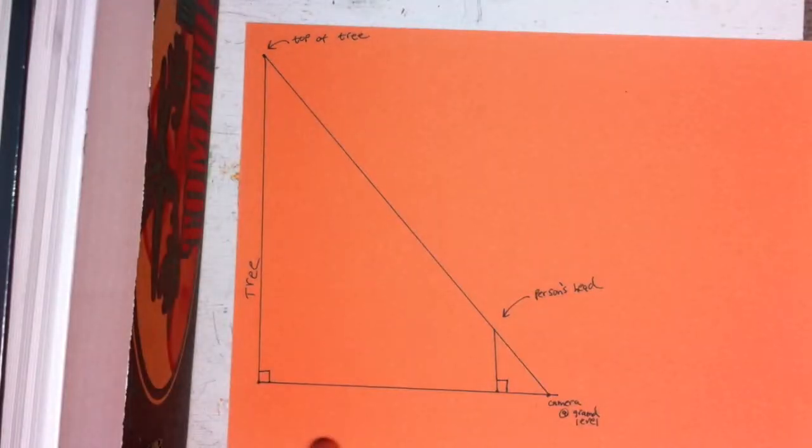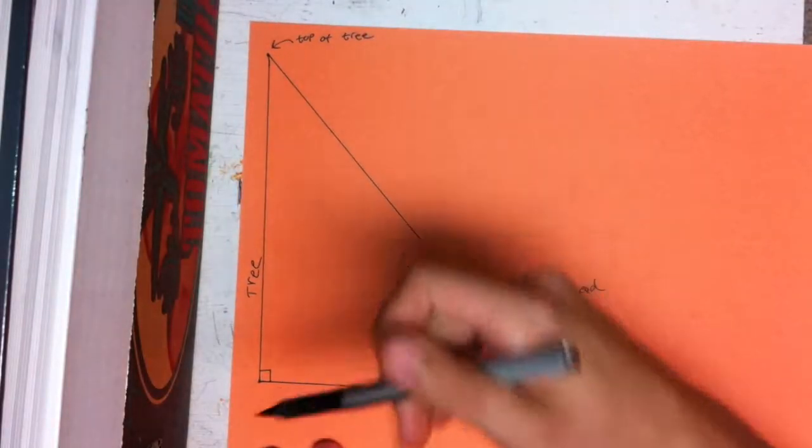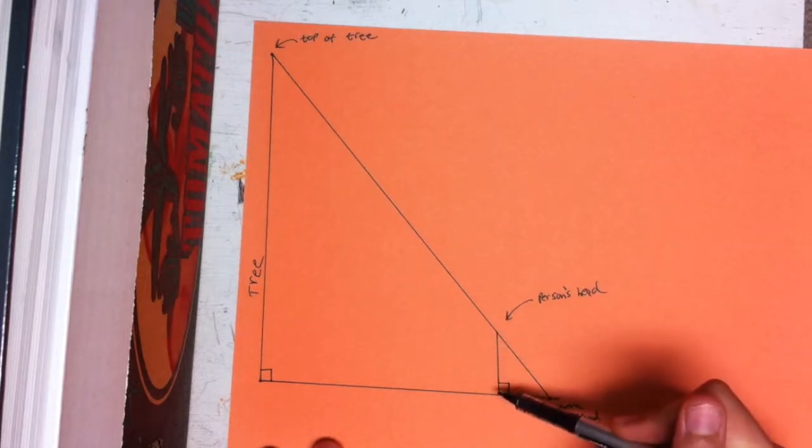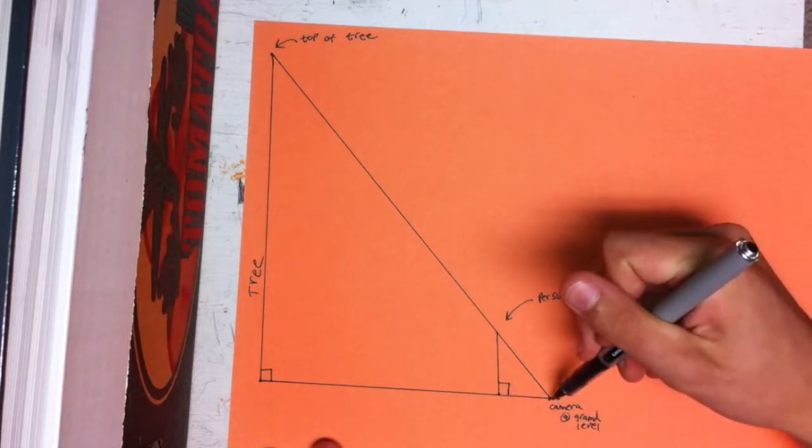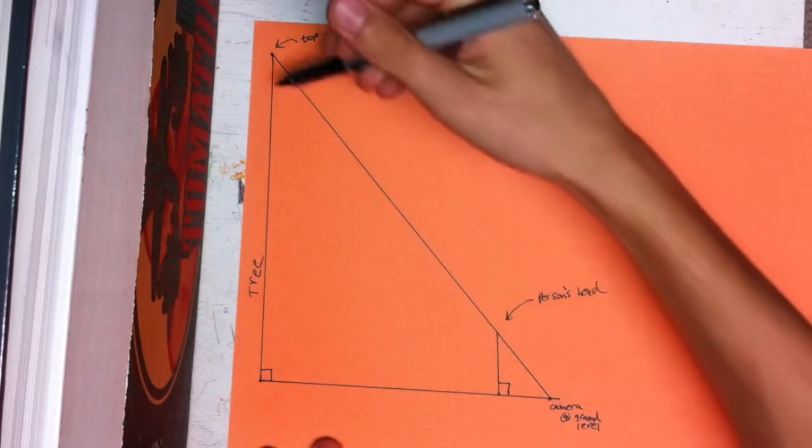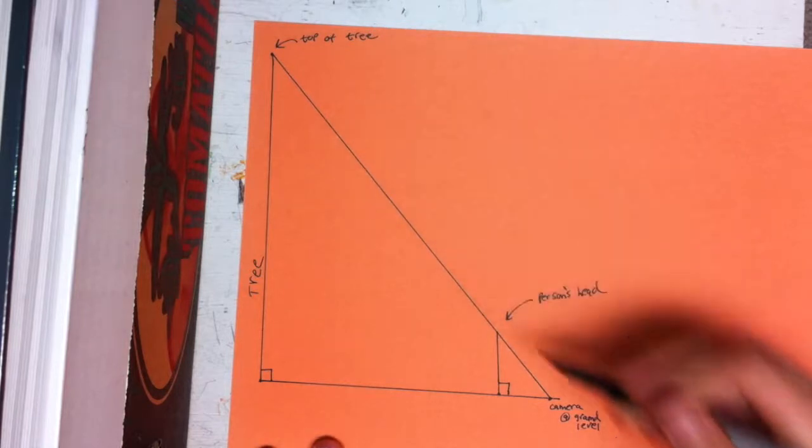So I have our diagram here. We have our tree here and then we have our person. It's gonna be standing here and then I'm gonna use my camera to look up and line up the top of the tree with the person's head.